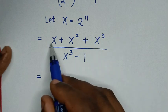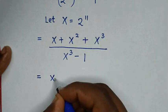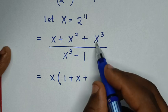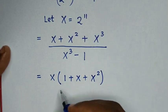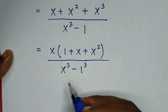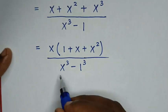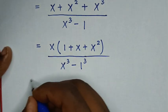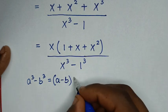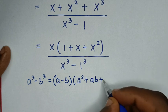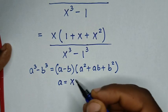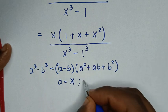In the numerator, x is common, so we factorize: taking x out gives x times bracket 1 plus x plus x squared, over x power 3 minus 1. Now x power 3 minus 1 is the same as x power 3 minus 1 power 3, putting it in the form of a difference of two cubes. We apply the rule: a power 3 minus b power 3 equals a minus b, bracket a squared plus ab plus b squared.